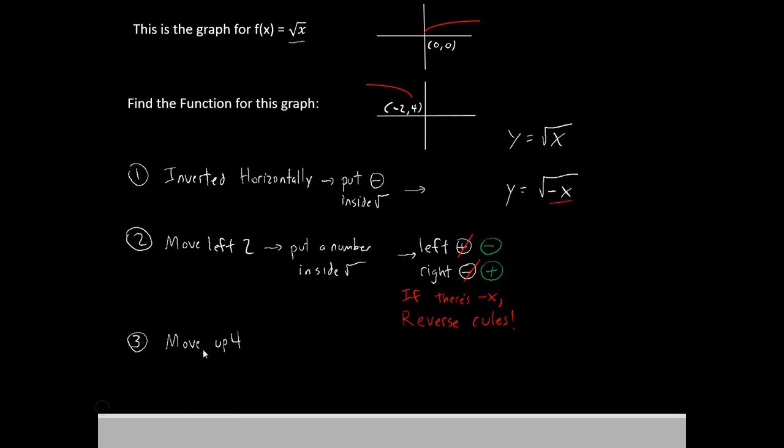That being said, let's try to write the new function. Again, we're trying to move left by 2. And this time left is negative because the negative x changed the rules. So we now have y equals root negative x minus 2 for our function.